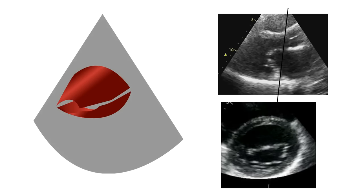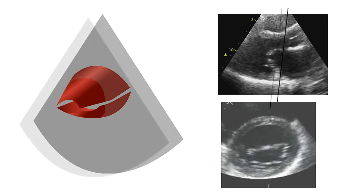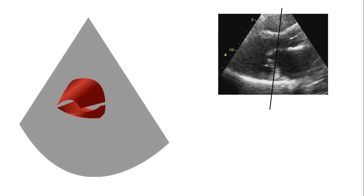If the imaging plane is away from the apex of the cone, the mitral valve area will look deceivingly normal. Tilting the probe to move the plane forward gets closer to the apex. The correct plane — cutting at the true apex — is the one that gives the real mitral valve area.